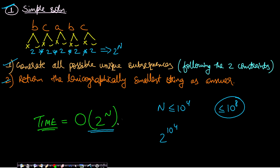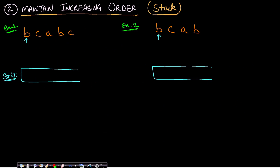Instead, think about maintaining the increasing order of the string so that all letters are uniquely included. If you've studied stacks, you know you can use a monotonic stack to maintain either increasing order (monotonically increasing stack) or decreasing order. In this case we want increasing order, and the second constraint is not including letters more than once.